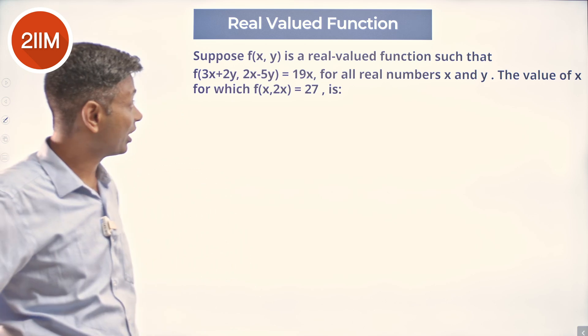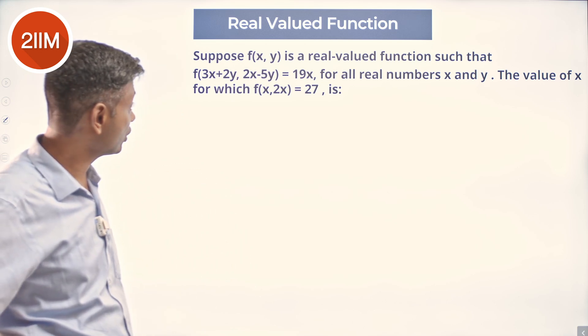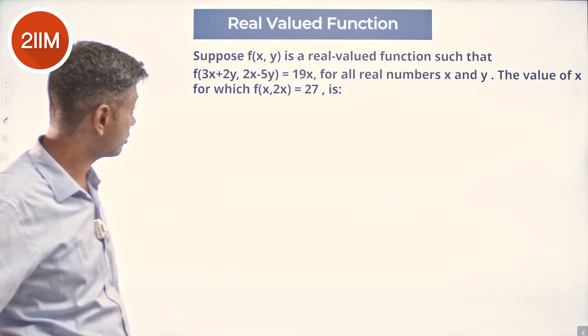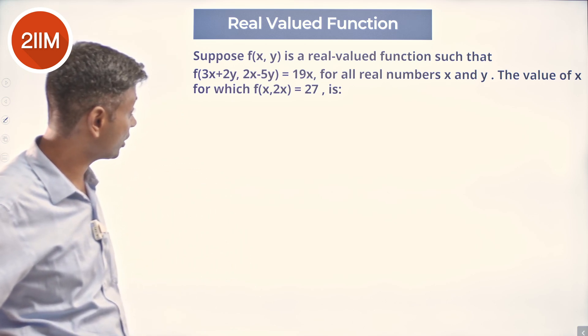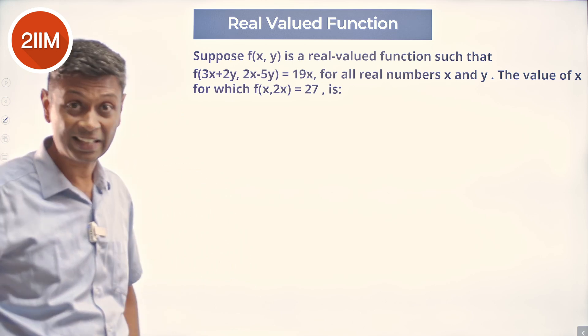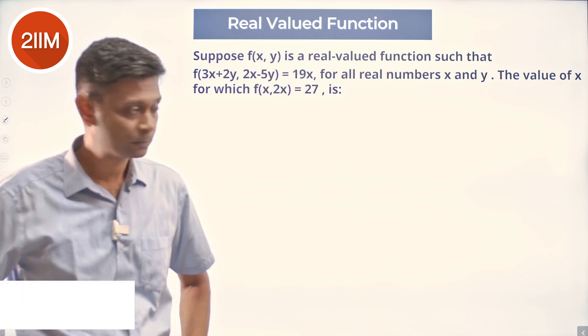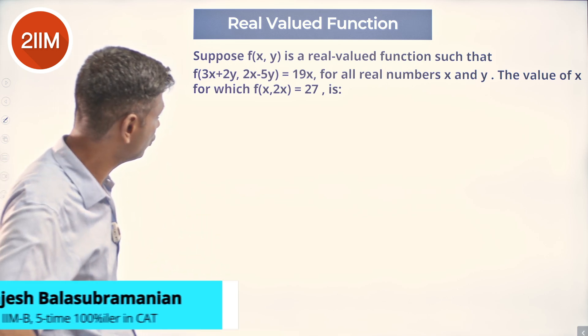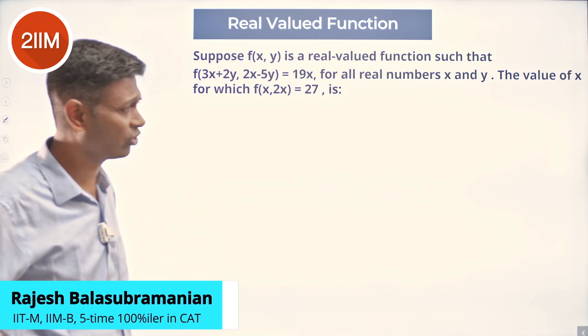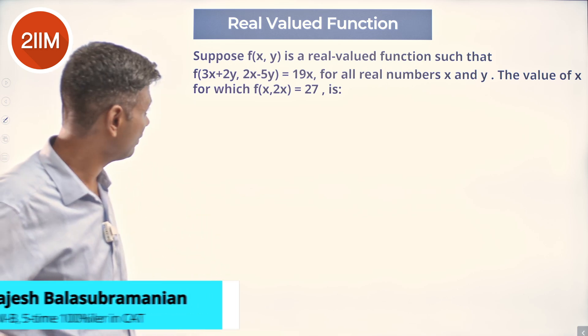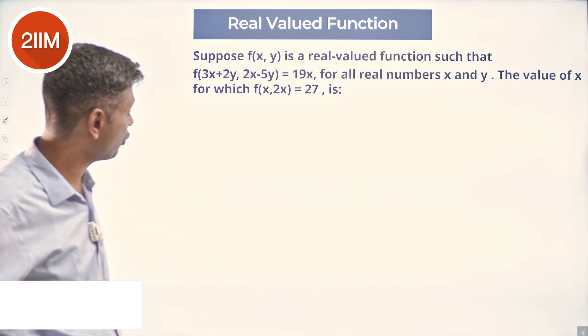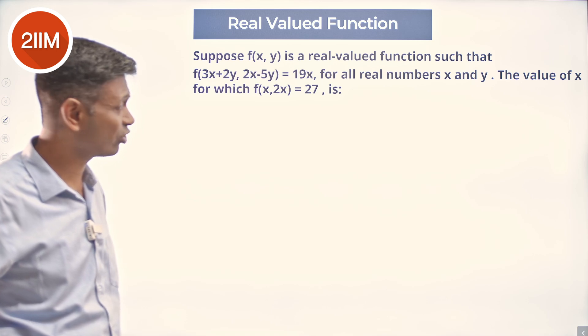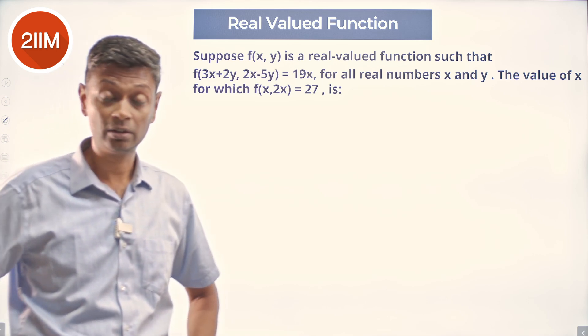Suppose f(x, y) is a real valued function such that f(3x + 2y, 2x − 5y) = 19x for all real numbers x and y. Find the value of x for which f(x, 2x) = 27.